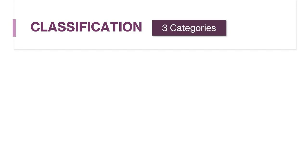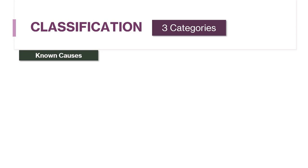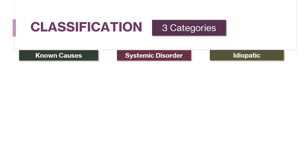Now we will discuss the classification of DPLDs. ILDs can be broadly grouped into three categories depending on the cause. The first category has a known cause for DPLD. The second category includes DPLDs due to a systemic disorder. The third category is where no known cause is found — that is, idiopathic — which makes up the largest proportion of DPLDs.